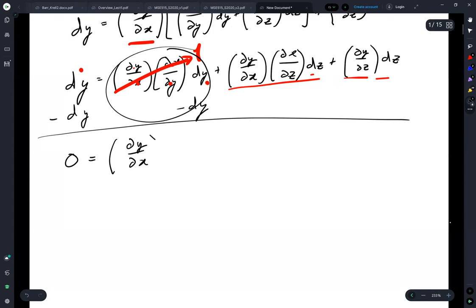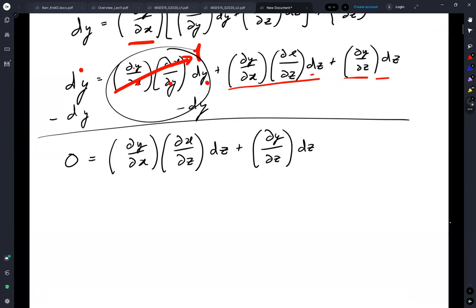That just gives us zero is equal to this whole first term now goes away. dy by dx, dx by dz dz plus dy by dz dz. And this is starting to look a little closer to what we're expecting, right? So we take and multiply both sides by one over dz. So multiplying zero by dz goes to zero. And on this side, they're going to cancel.